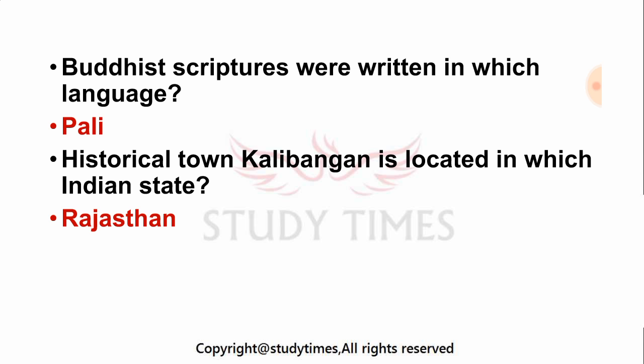The capital of Rajasthan is Jaipur, and Jaipur is also known as the Pink City. There are 25 Lok Sabha seats in Rajasthan. The chief minister of Rajasthan is Vasundra Raje, and the governor of Rajasthan is Kalyan Singh.